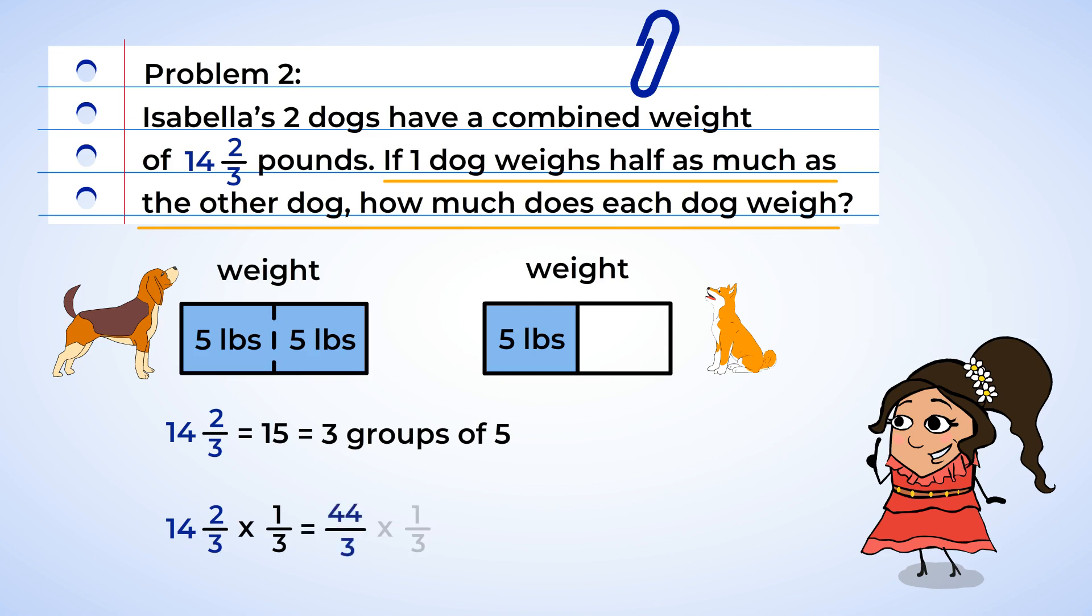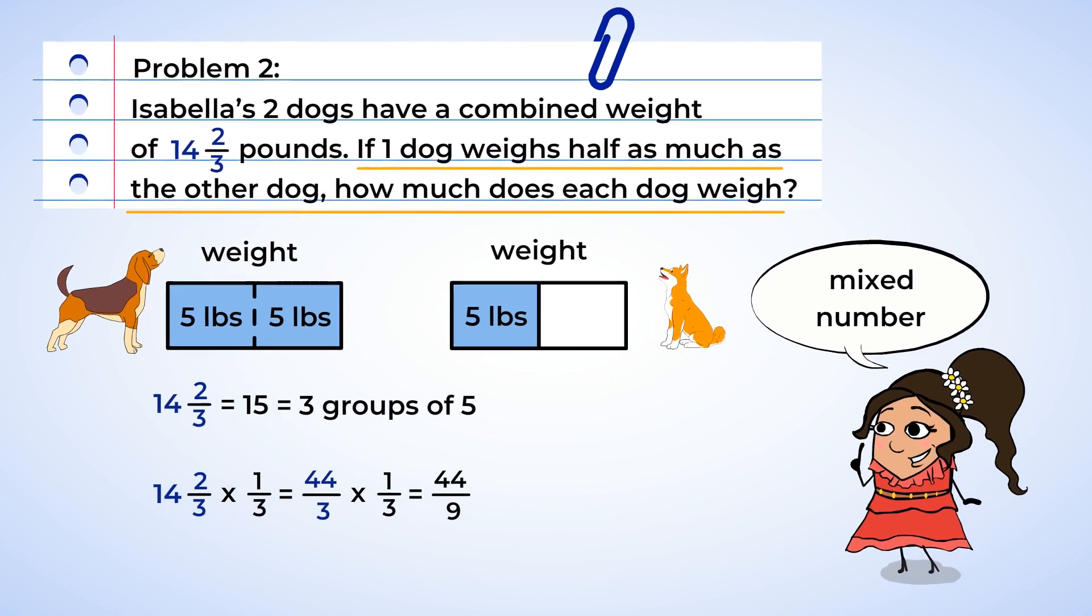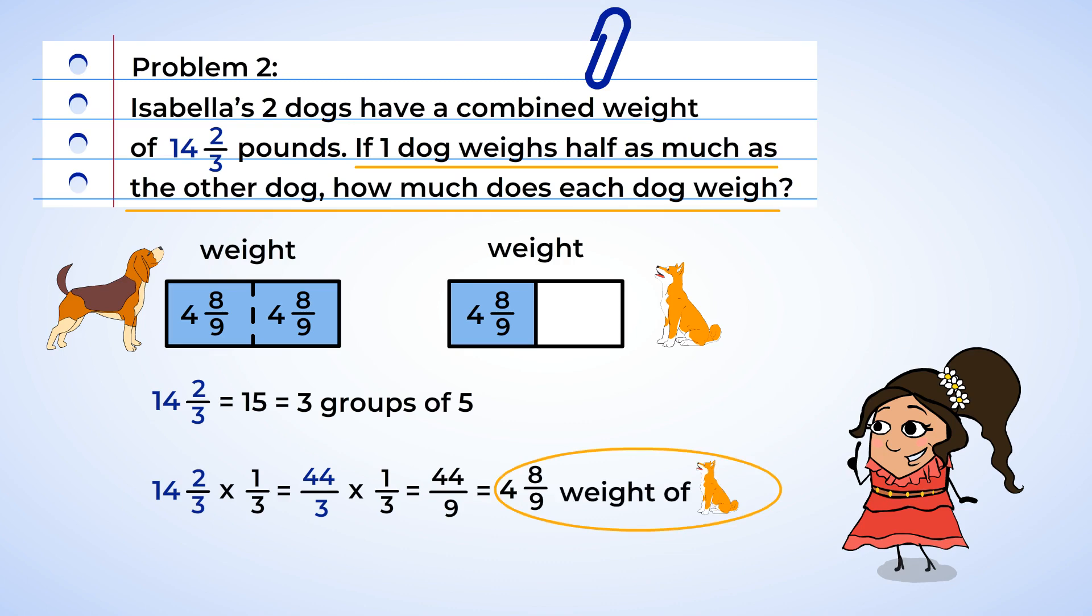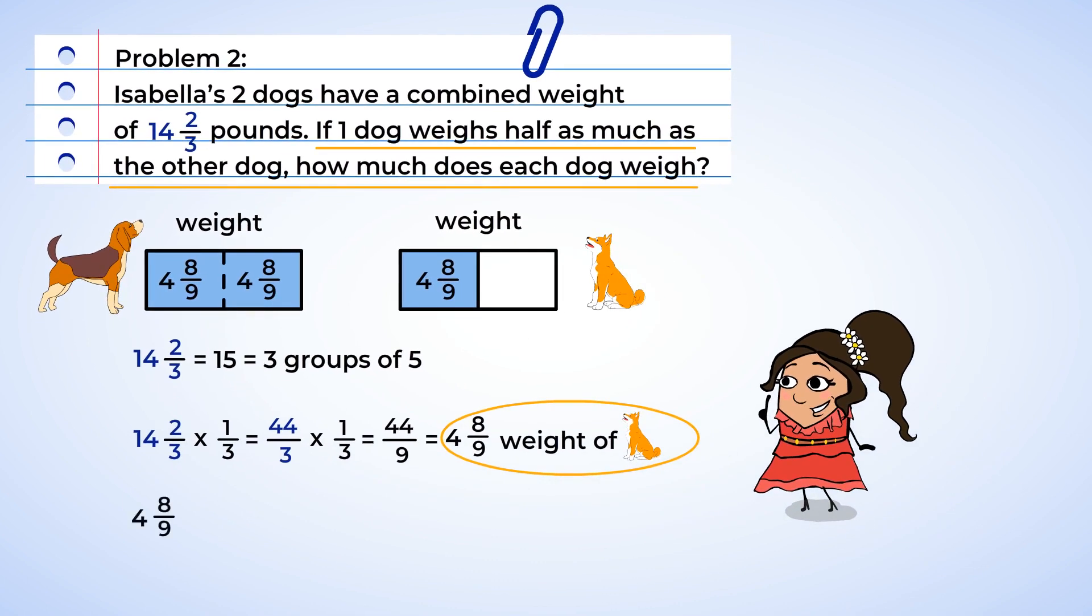44 thirds multiplied by one-third. Now 44 times 1 is 44, and 3 times 3 is 9. So each section is 44 ninths. And now let's change that to a mixed number. 9 times 4 is 36. So there are 4 wholes with 8 ninths left. Therefore, each section is 4 and 8 ninths. And that means one dog weighs 4 and 8 ninths pounds, and the other dog weighs 4 and 8 ninths plus 4 and 8 ninths. And that's 9 and 7 ninths pounds.